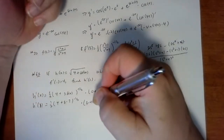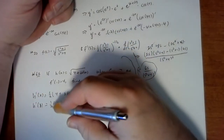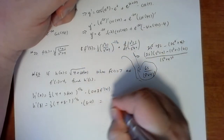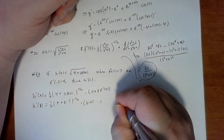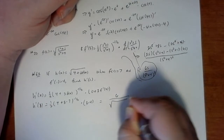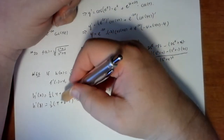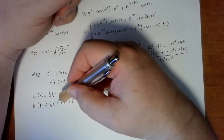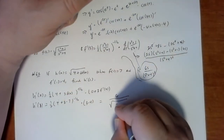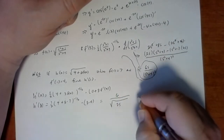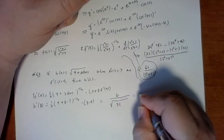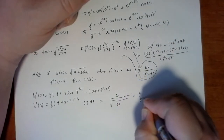So 12 divided by 2 is 6, and 4 plus 3 times 7 is 4 plus 21, which is 25 — the square root is 5 — giving us 6 fifths.